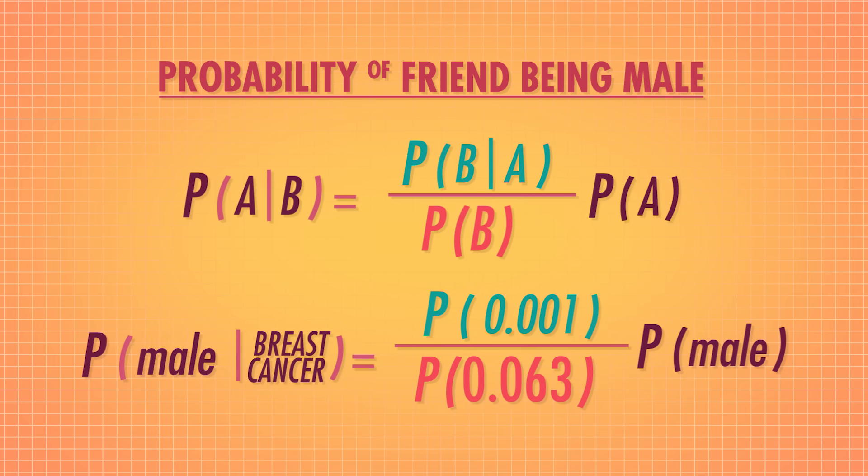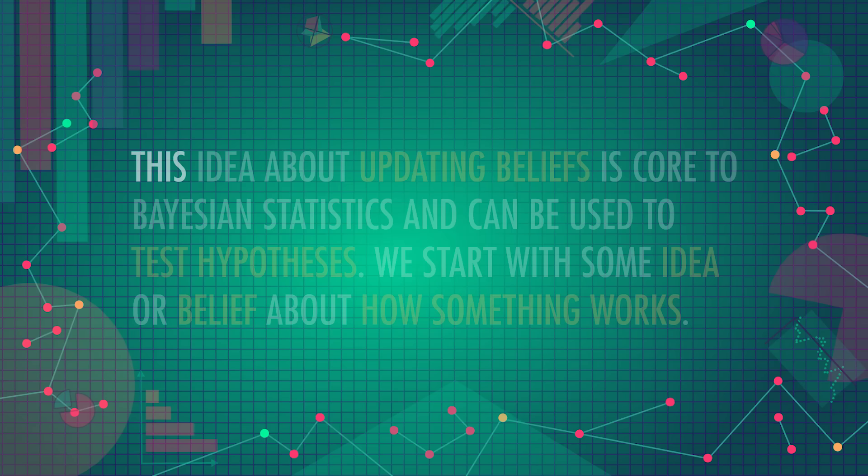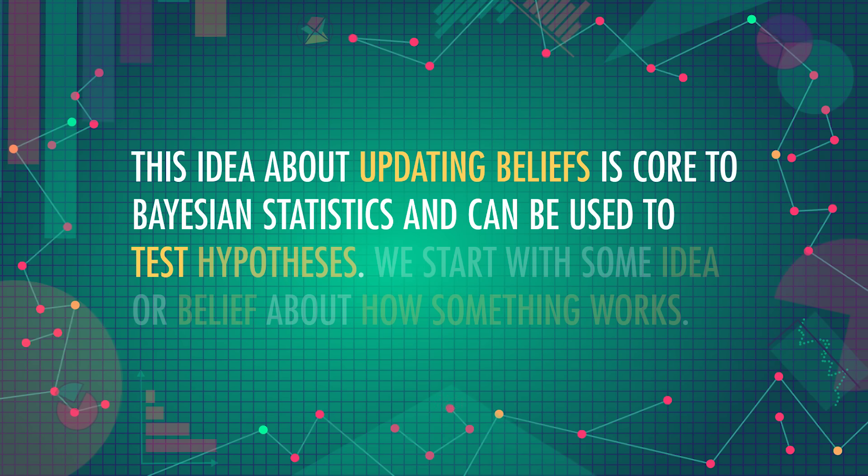If we rearrange Bayes' Theorem slightly, we can see that it allows us to update our beliefs based on new information. When we use Bayes' Theorem, what we're really doing is updating our belief that a person was male — probably about 50-50 odds if we don't know anything else about them — with the new information that they had breast cancer. This new information changed our belief. We went from a 50% chance to about a 0.79% chance just by taking into account this new information. This idea about updating beliefs is core to Bayesian statistics and can be used to test hypotheses.